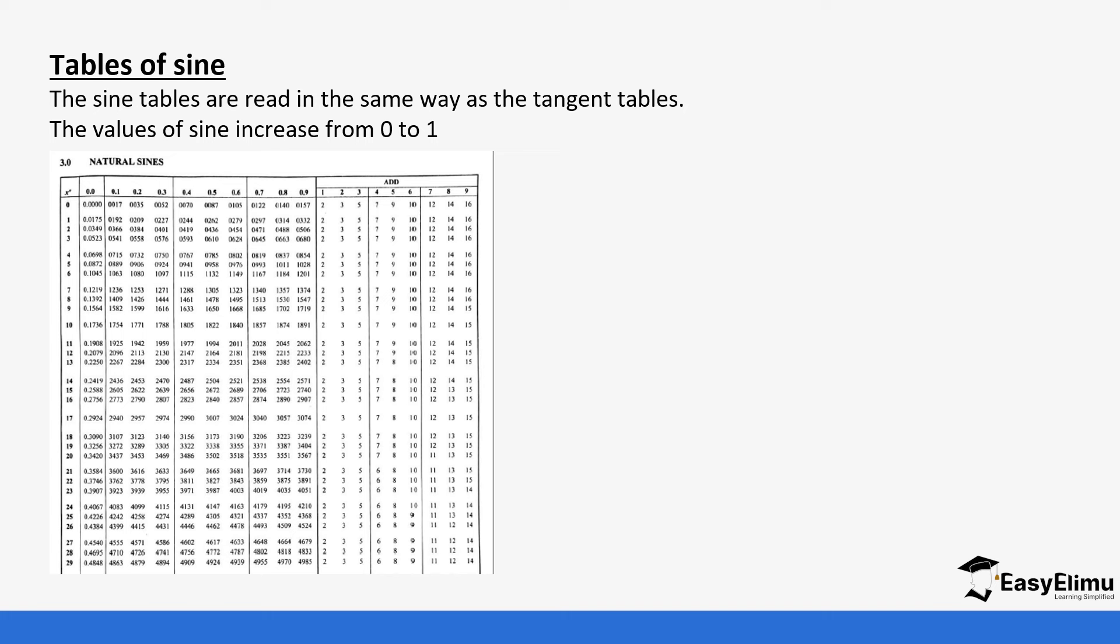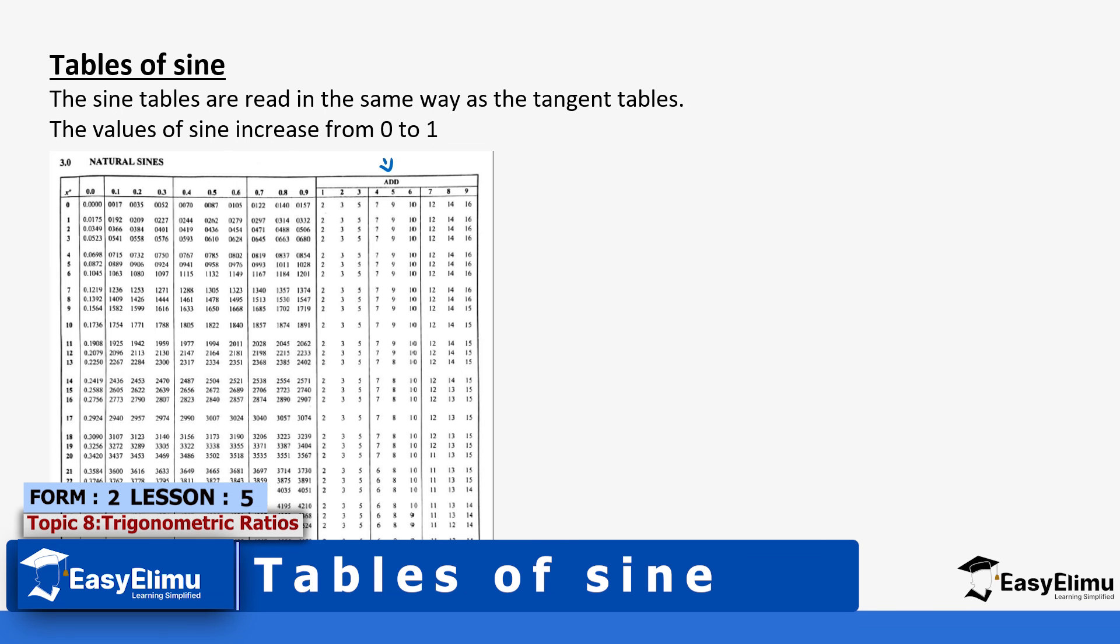When you look at the table of natural sines, we have the same columns as we had with the tangent tables. Remember, the add column is the one that distinguishes between a table of sine and cosine. You read in the same way we read with tangent tables.